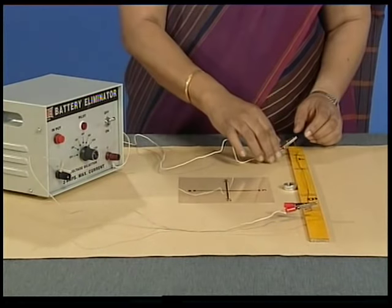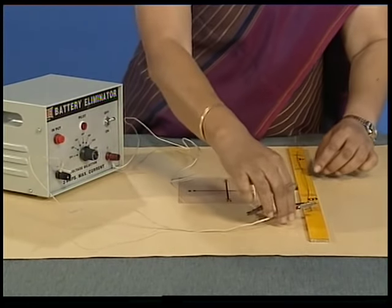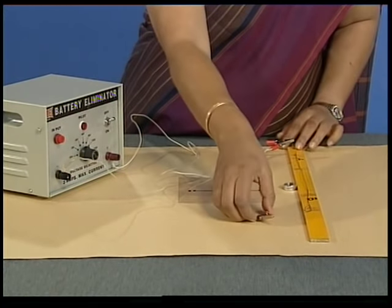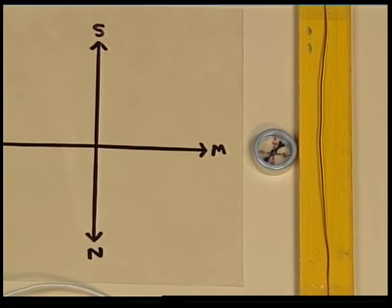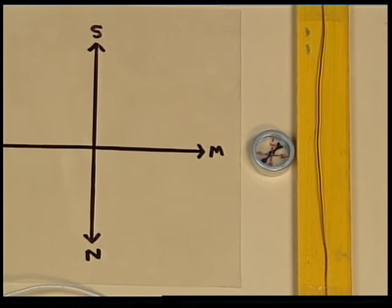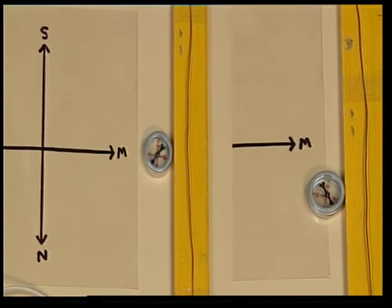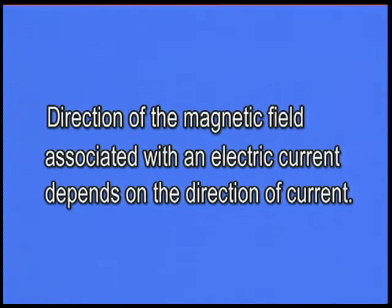Let us now reverse the direction of current in the wire and observe what happens to the compass needle. The direction in which the compass needle pointed also got reversed. So we have observed that the direction of magnetic field associated with an electric current depends on the direction of current.